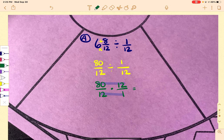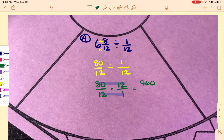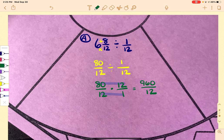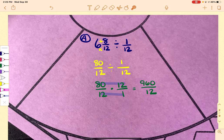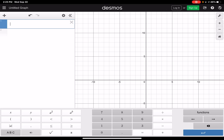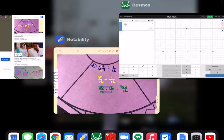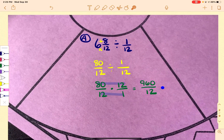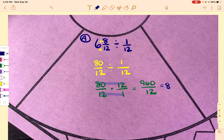So 80 times 12 is 960. On the bottom 12 times 1 is 12. And we're going to take this part right here and we're going to go put it in Desmos. So 960 over 12. And you can see that comes out actually as a whole number of 80. So this equals 80.